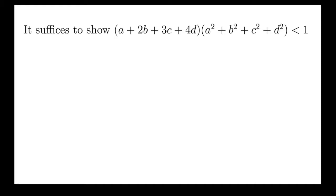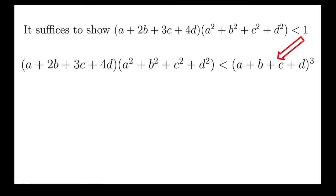It is easy for this inequality because the tool we have is replacing 1 by A plus B plus C plus D, which allows us to add degree 1 by 1. So the required inequality becomes A plus 2B plus 3C plus 4D times A2 plus B2 plus C2 plus D2 is less than A plus B plus C plus D whole cubed.